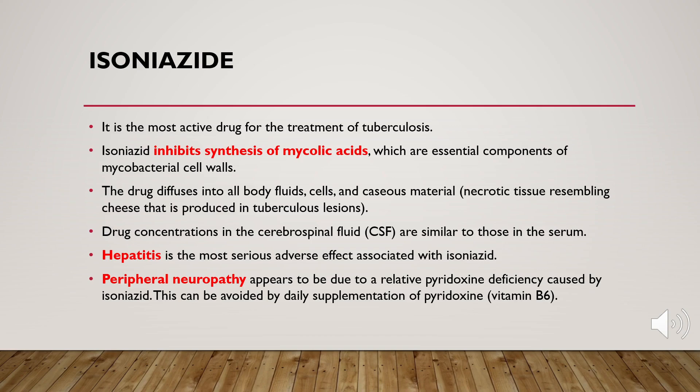Without a cell wall, the bacteria die. The good thing about isoniazid is that it diffuses into all body fluids and also into caseous material. When you have a TB lesion in the skin or elsewhere in the body and open it, you will see necrotic tissue resembling cheese.